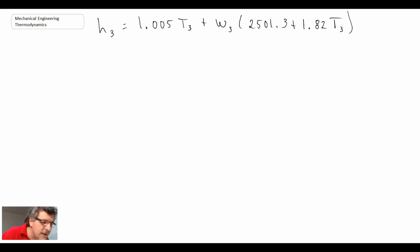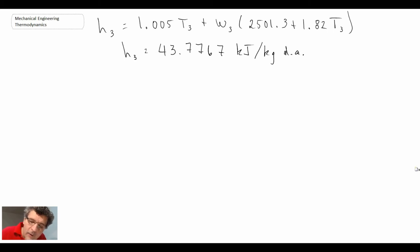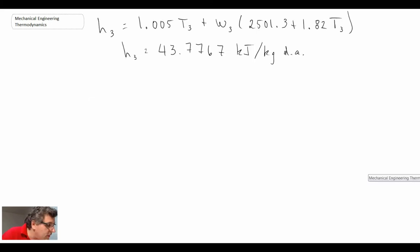We have that expression. Now we know T3 and specific volume at 3, so we can directly calculate H3. H3 turns out to be the following, and I put DA there for kilograms of dry air. Now we'll go back to our last equation and we now have all the things enabling us to get H2.